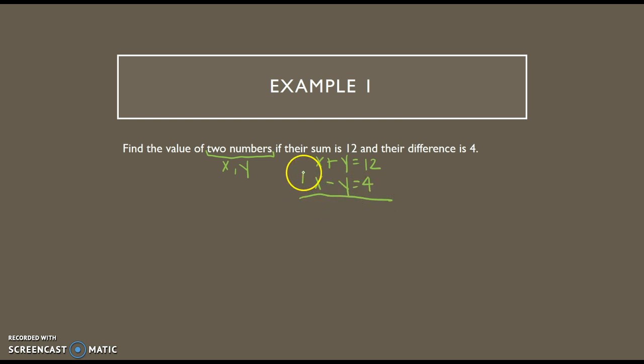I don't even have to do anything to my equations. I'm just going to add the top and the bottom. My y's go away. x plus x is 2x. 12 plus 4 is 16. My y's are gone, so now I can solve for x by dividing by 2 and getting that x equals 8.